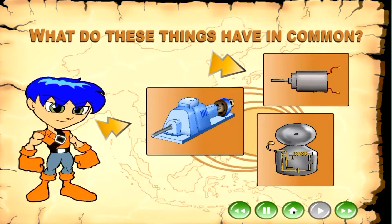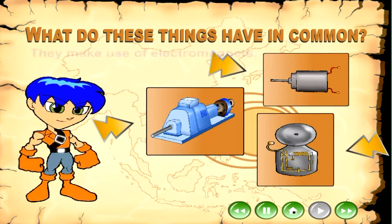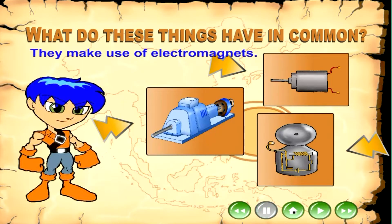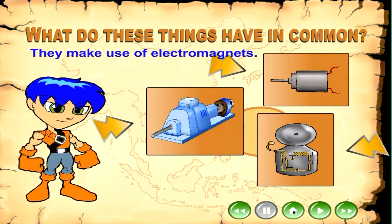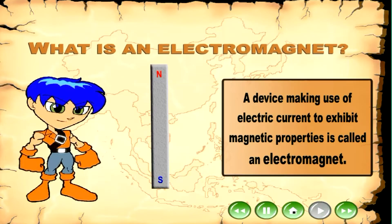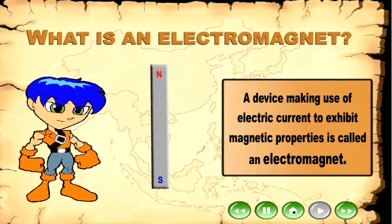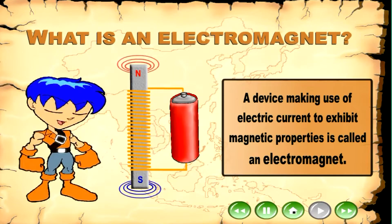What do these things have in common? They make use of electromagnets. What is an electromagnet? A device making use of electric current to exhibit magnetic properties is called an electromagnet.